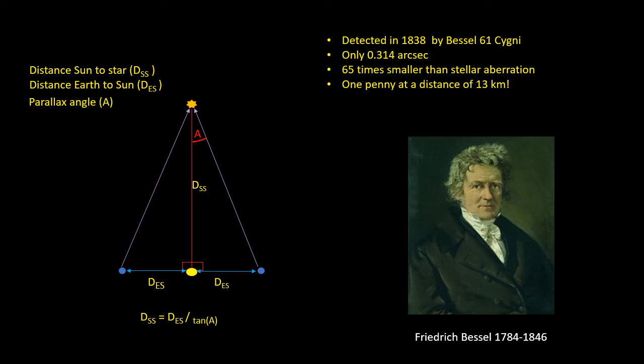So because parallax was so difficult to detect, even by the year 1900 only 60 nearby stars had had their parallax measured, and it wasn't until the development of machines to accurately measure the positions of stars on photographic plates, which didn't come until later in the 20th century, that a large number of parallaxes were calculated.